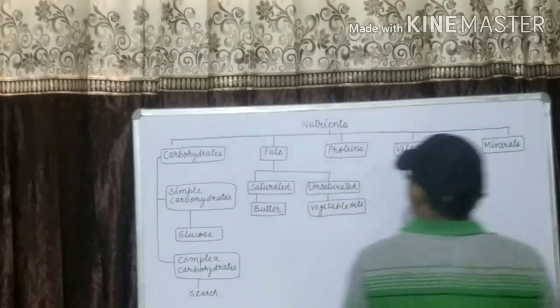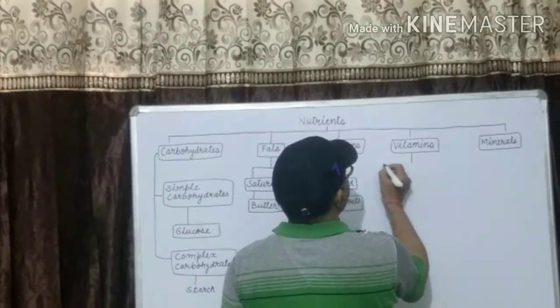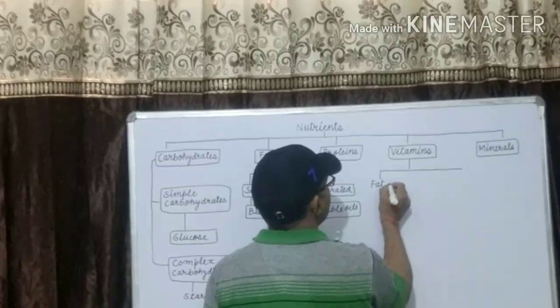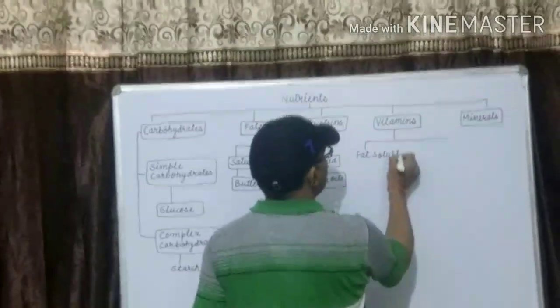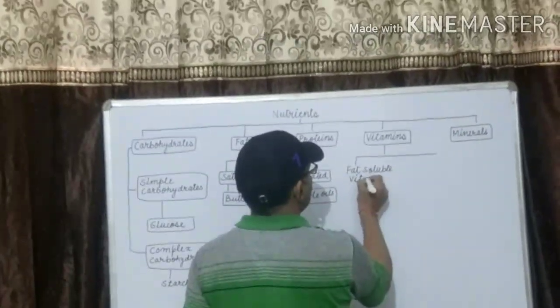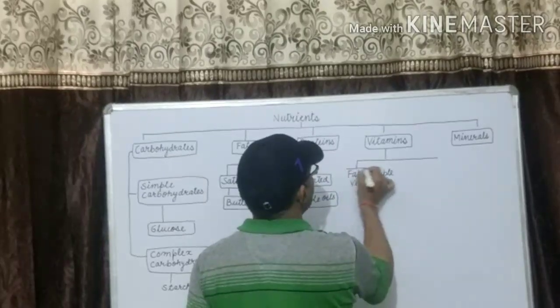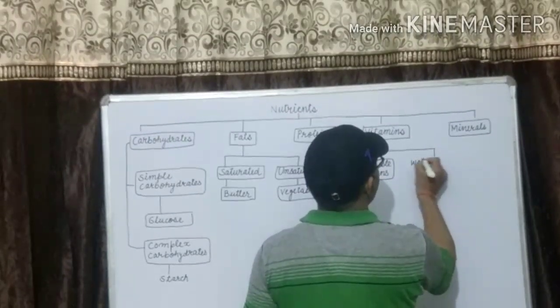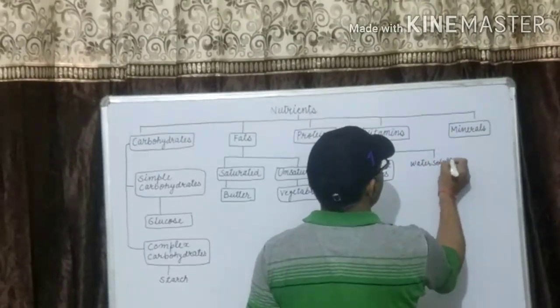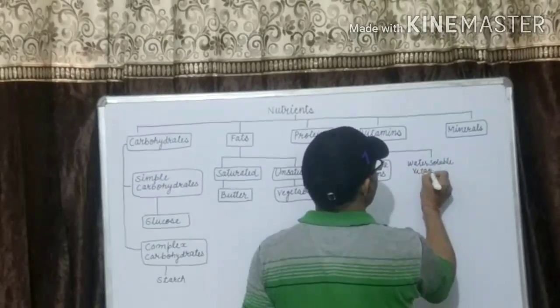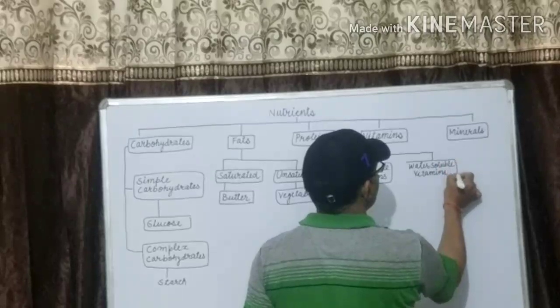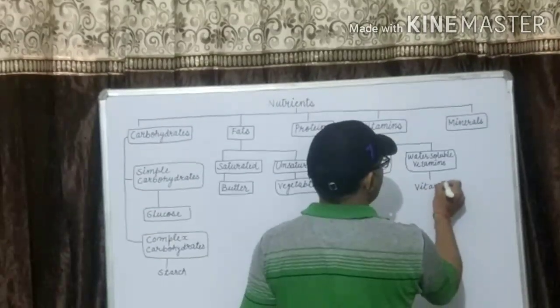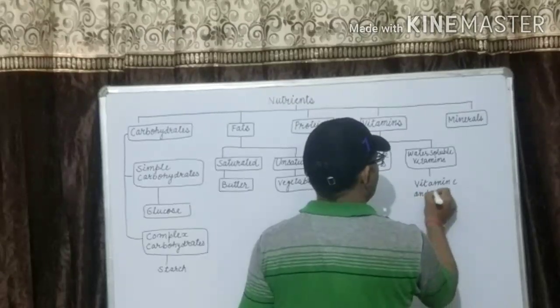Vitamins are also two types: fat-soluble vitamins and water-soluble vitamins. Example vitamin C and B complex.